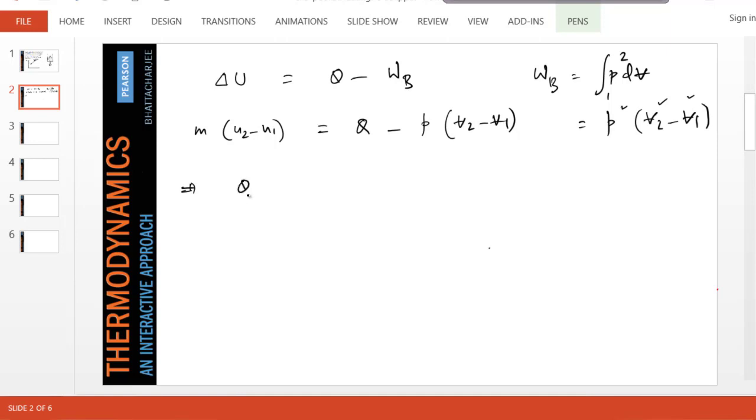So therefore, Q can be written as m(u2 - u1), and we are switching sides, plus pressure... and let's bring the mass outside, so we get V2 minus V1. You get it? Because we know volume is nothing but mass times small v, specific volume.